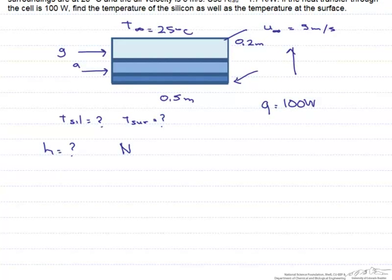The way we approach it is, we find an appropriate correlation for the Nusselt number, which is that h that we need, times L over the thermal conductivity of the fluid, which is the air. And this is a function of the Reynolds number, as well as the Prandtl number.